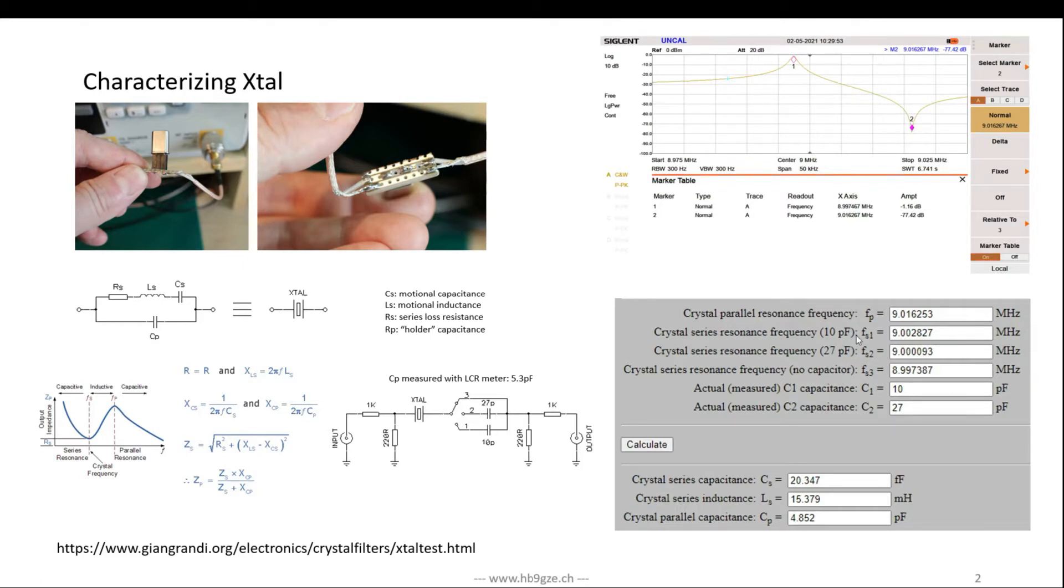The way to measure these replacement values: the only value you can measure directly is Cp, the parallel capacity. Just plug the crystal in an LCR meter and measure this capacity. In my case, that was 5.3 picofarads. The other three values you have to indirectly measure. There are well-known methods, very well described by Johnny Grundy. You need to make three measurements: one without any series additional capacity, one with your crystal plus 27 picofarad, and one with crystal plus 10 picofarad.